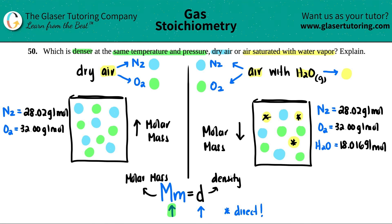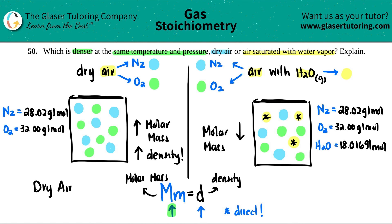So which one is denser? It's the dry air, because it's a direct relationship — higher molar mass means higher density. Dry air is denser, and that is the final answer to this question.